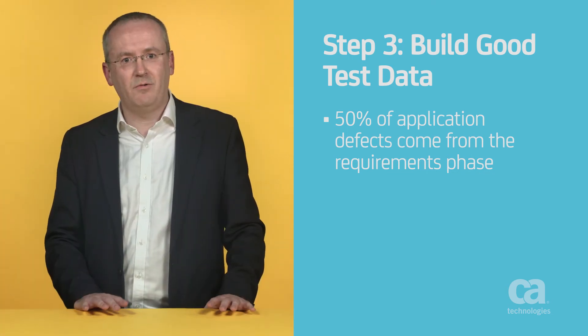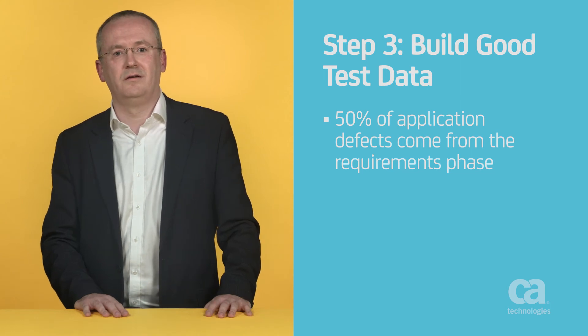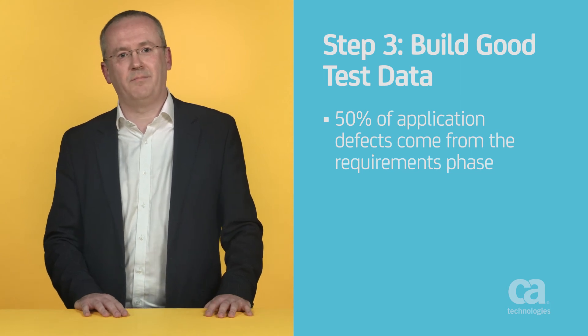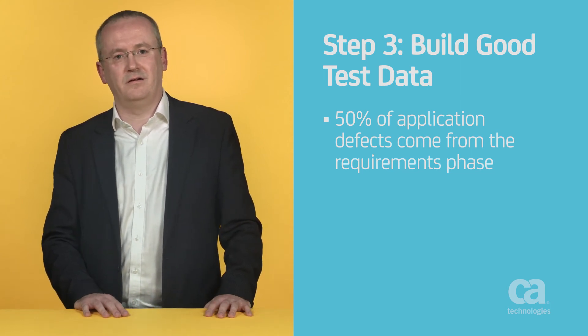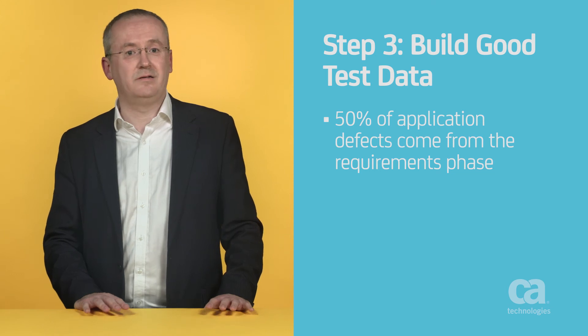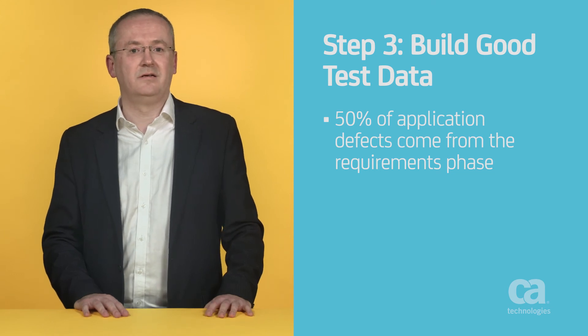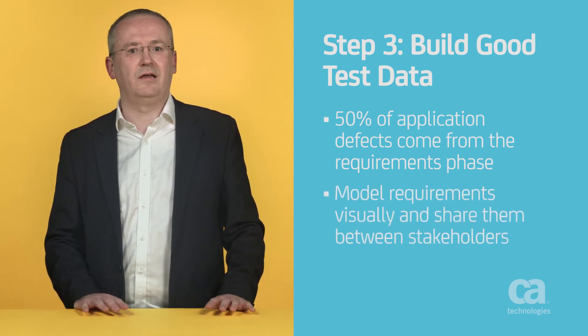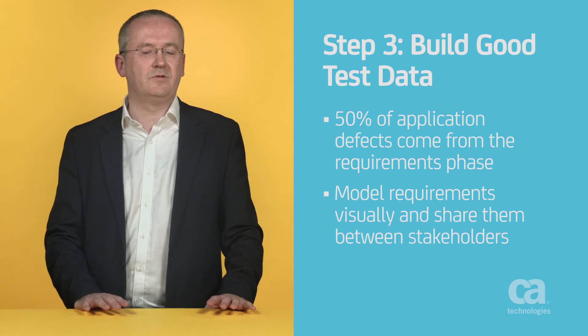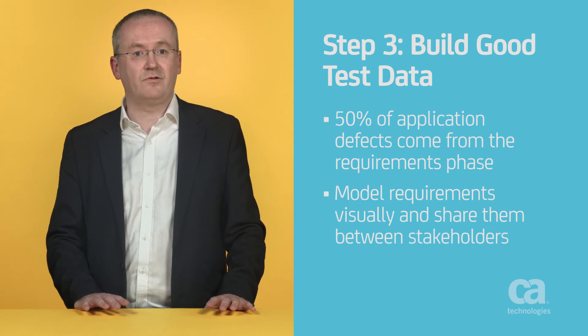So if we really want to raise the bar on quality, we need to think about defining better understood requirements. The best way to do that is by modeling our requirements visually, so we can share those requirements between the different cross-functional stakeholders — the business, the business analysts, the developers, the testers — who all need to come together and collaborate well to ensure that we are testing the right things.